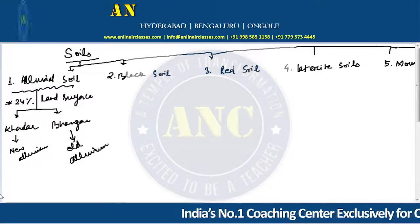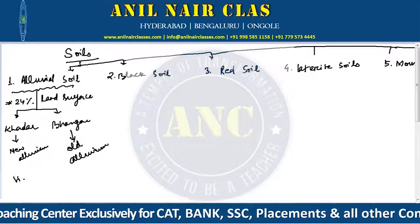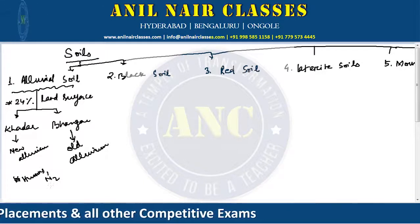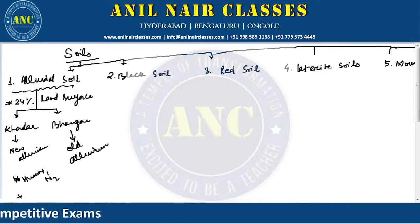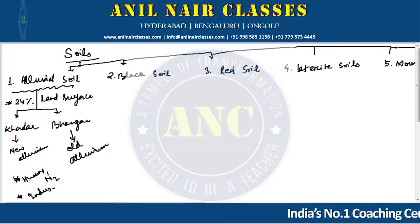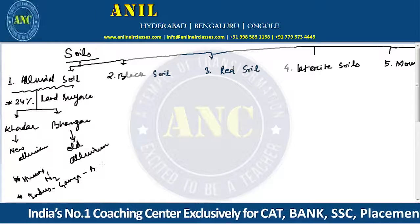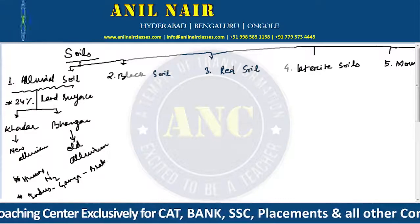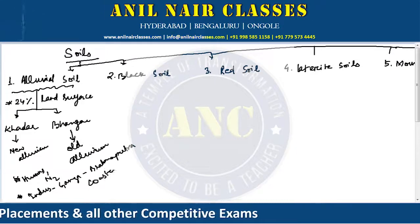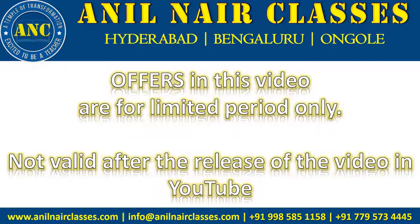The old alluvium — bhangar — is deficient in humus as well as nitrogen. We find it basically in the plains of Indo-Gangetic or Indus-Ganga and Brahmaputra coastal plains. These are the few important things one has to understand about alluvial soil.